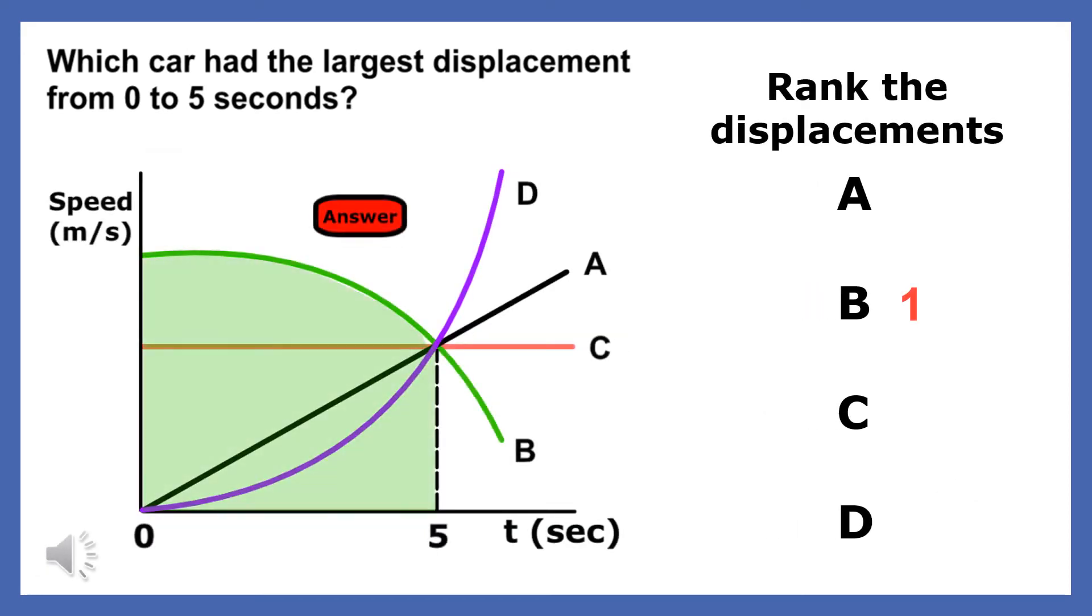Let's find the object with the next greatest displacement. Look at all the other objects and find the one with the greatest area underneath the plot. The object with the second greatest displacement from 0 to 5 seconds is object C.